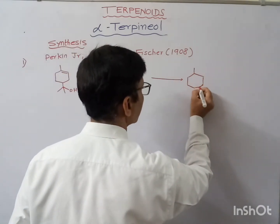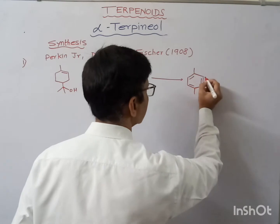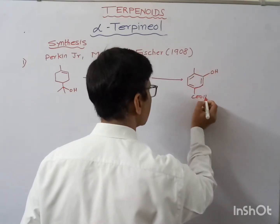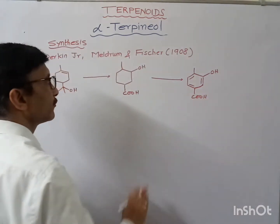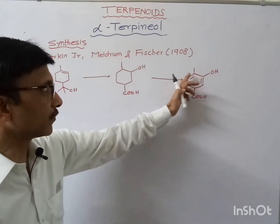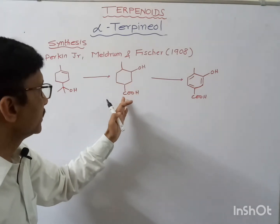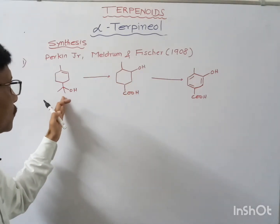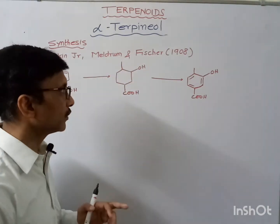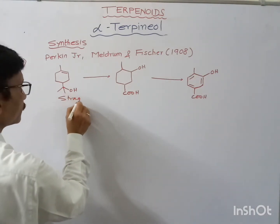Now how can this be obtained? Suppose we have an aromatic hydroxy acid. After complete reduction of this aromatic hydroxy acid, it can be converted into the aliphatic compound. Finally, the COOH group can be converted into the tertiary alcohol, and the OH group can be removed to bring in the double bond. This is the strategy.